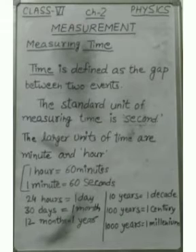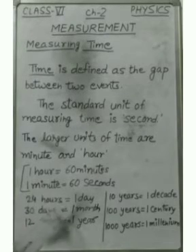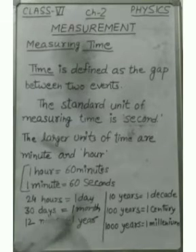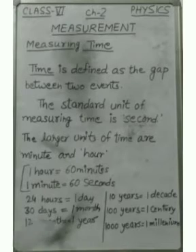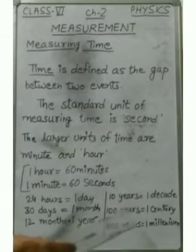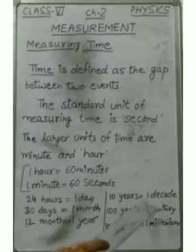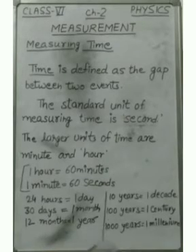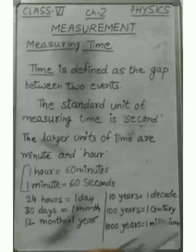The bigger units of time for expressing longer time intervals are day, month, and year. 24 hours make 1 day, 30 days make 1 month, and 12 months make 1 year. The still bigger units for expressing very long time intervals are decade, century, and millennium. 10 years is equal to 1 decade, 100 years is equal to 1 century, and 1000 years make 1 millennium.